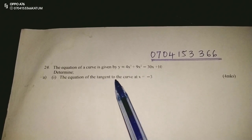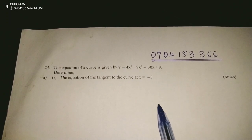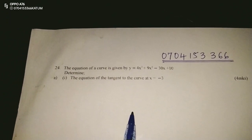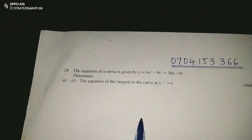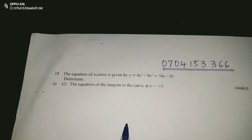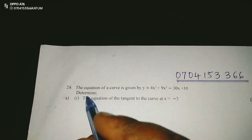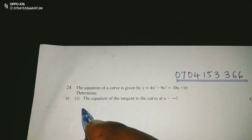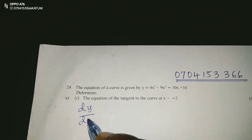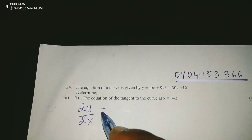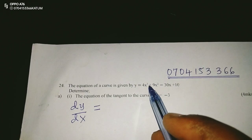Determine part 1: the equation of the tangent to the curve at x equals negative 3. To get the equation of the tangent, we first need to get what we call the gradient function. The gradient function is obtained by differentiating the curve — the derivative of y with respect to x gives us the gradient function.